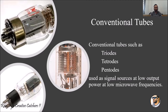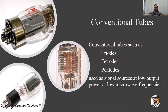The three types of conventional tubes are triodes, tetrodes, and pentodes. You can observe them here — these are the images of triodes, tetrodes, and pentodes. These were used in most electronic devices where signal sources were producing very low power and also at very low microwave frequencies.